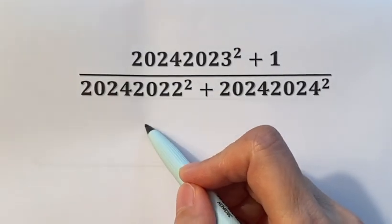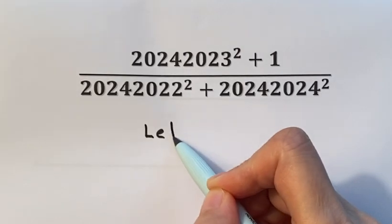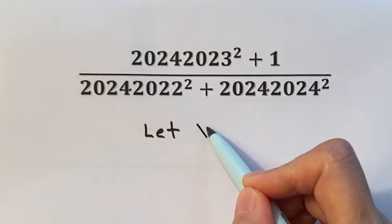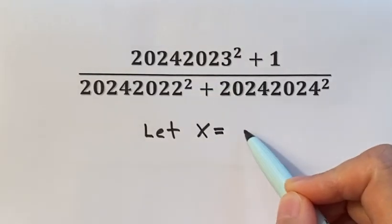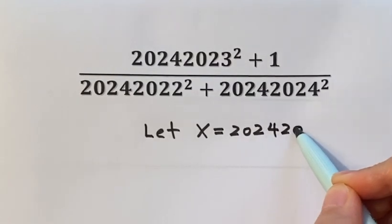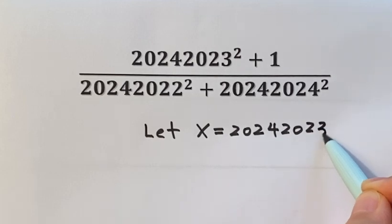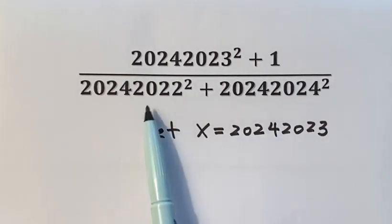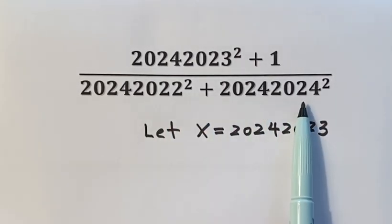Okay, so first let x equal this number. So that's 20,242,023. Then the other two numbers can also be written in terms of x.